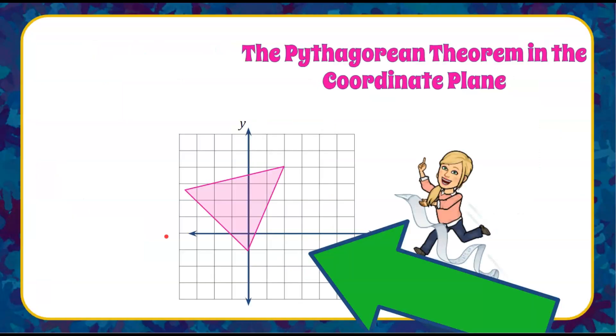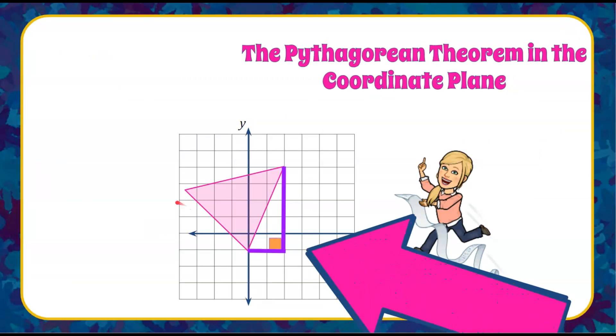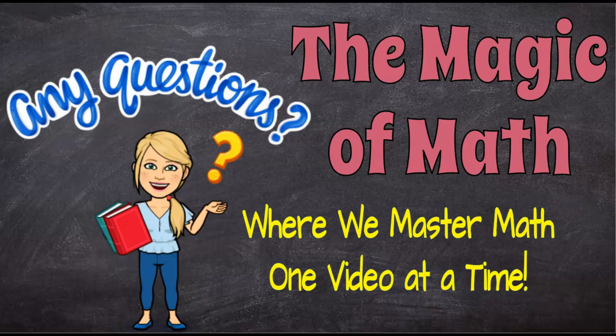So there you have it. That's how we use the Pythagorean theorem in the coordinate plane to find a length of a segment that's a diagonal line. I thank you for joining me today at The Magic of Math, where we continue to master math one video at a time. Have a great day.